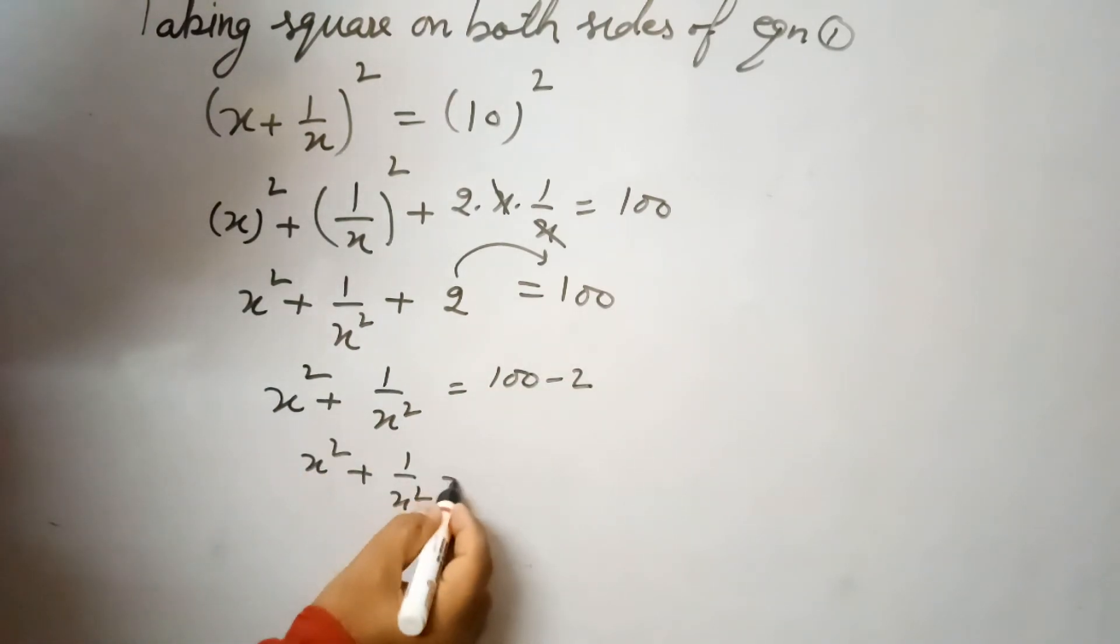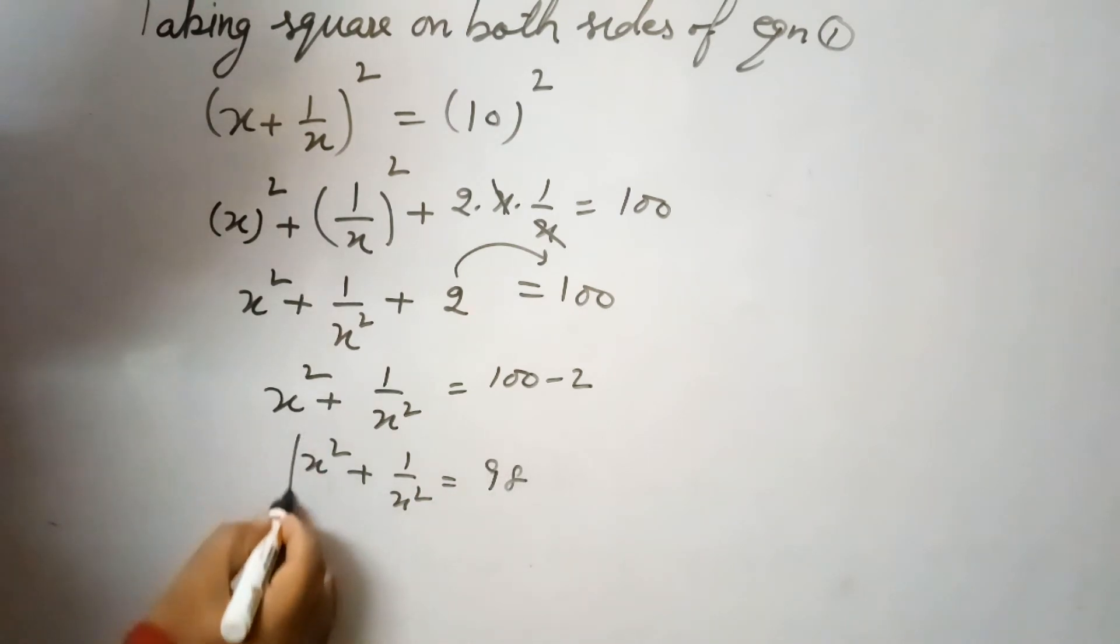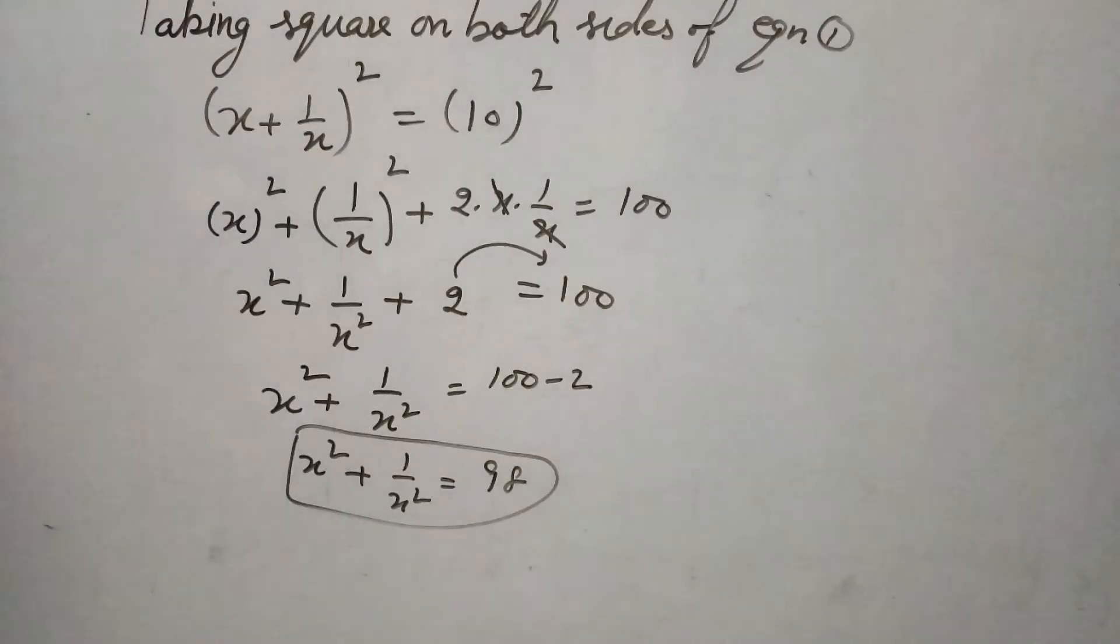x square plus 1 over x square equals 98. So this is our answer, this is the value of x square plus 1 over x square.